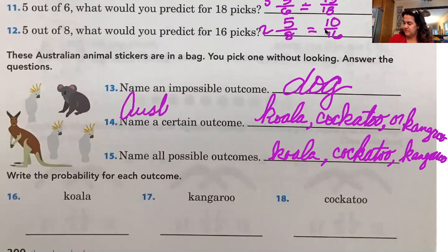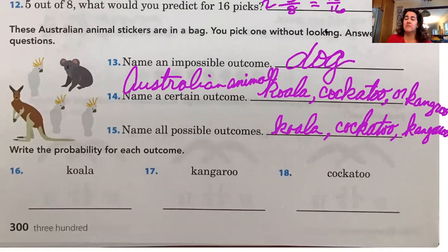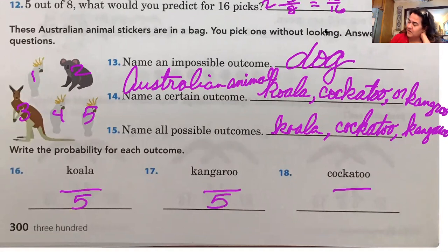Okay. Now, what's the probability for each outcome? So remember for probability, how many animals do I have in total? Let's count. One, two, three, four, five. So I have however many over five, right? Now, out of the five animals, how many are koalas? One out of five. One fifth. Very good. How many are kangaroos? One out of five. And how many of them are cockatoos, friends? Three out of five. Good job, second graders.